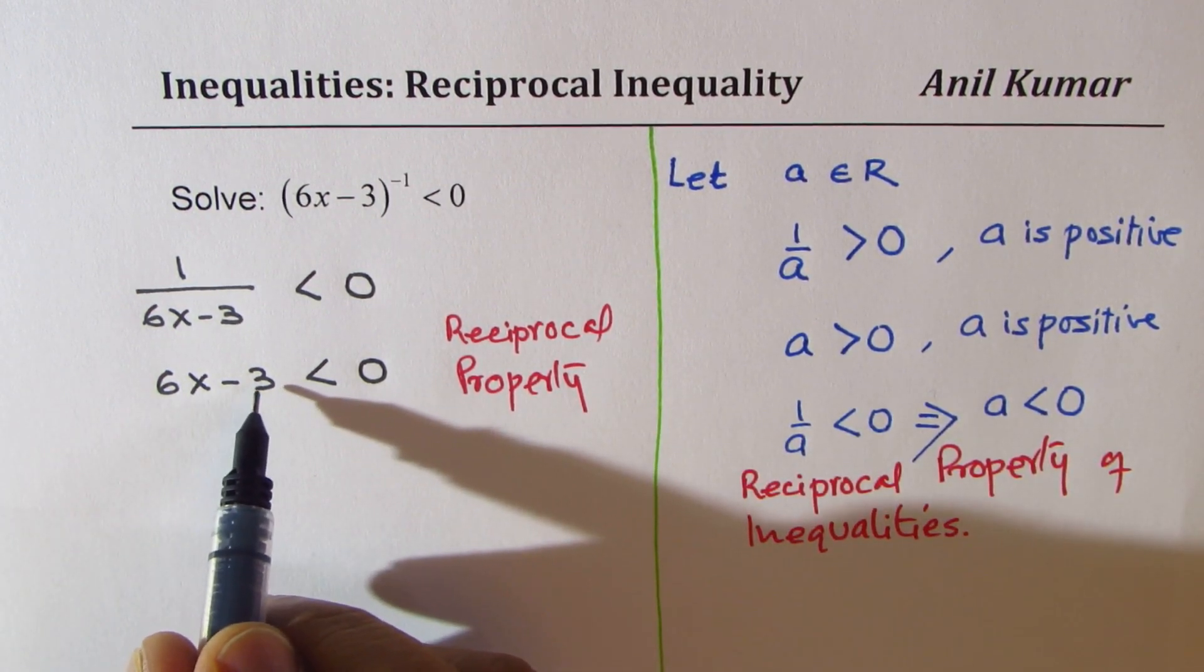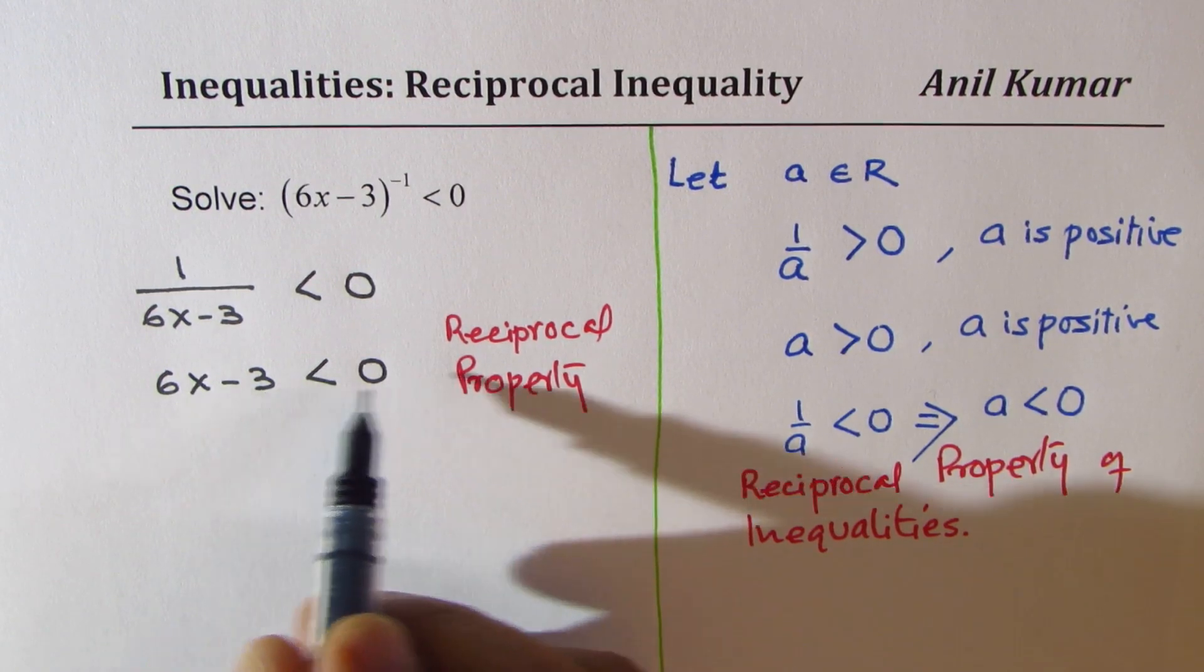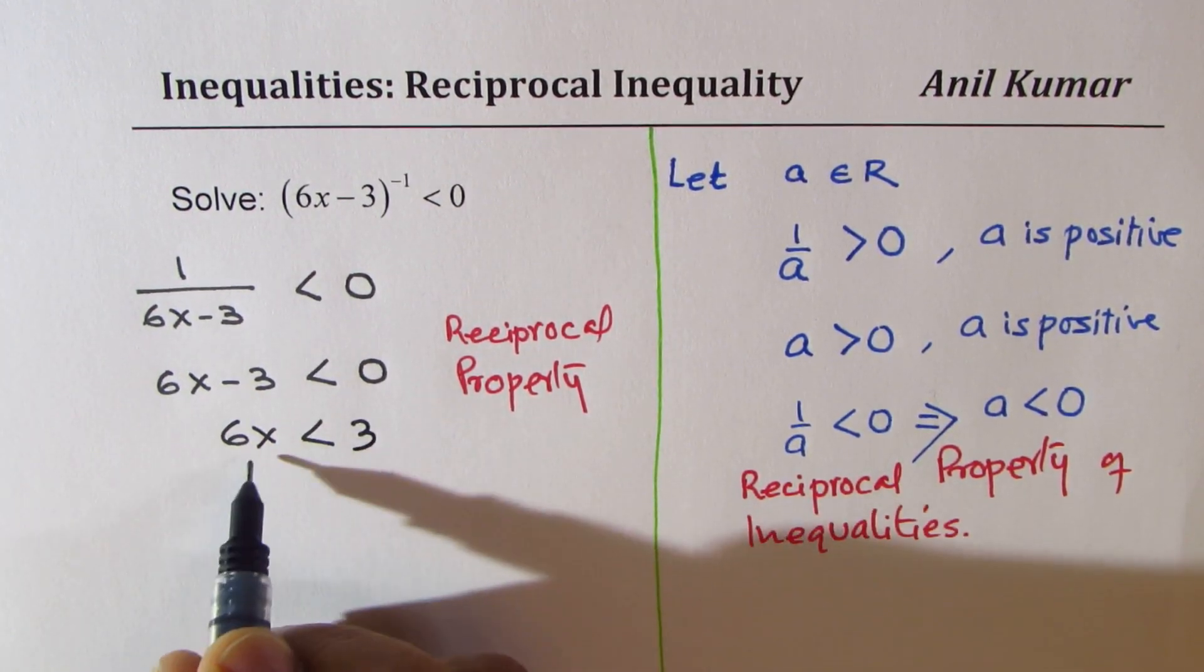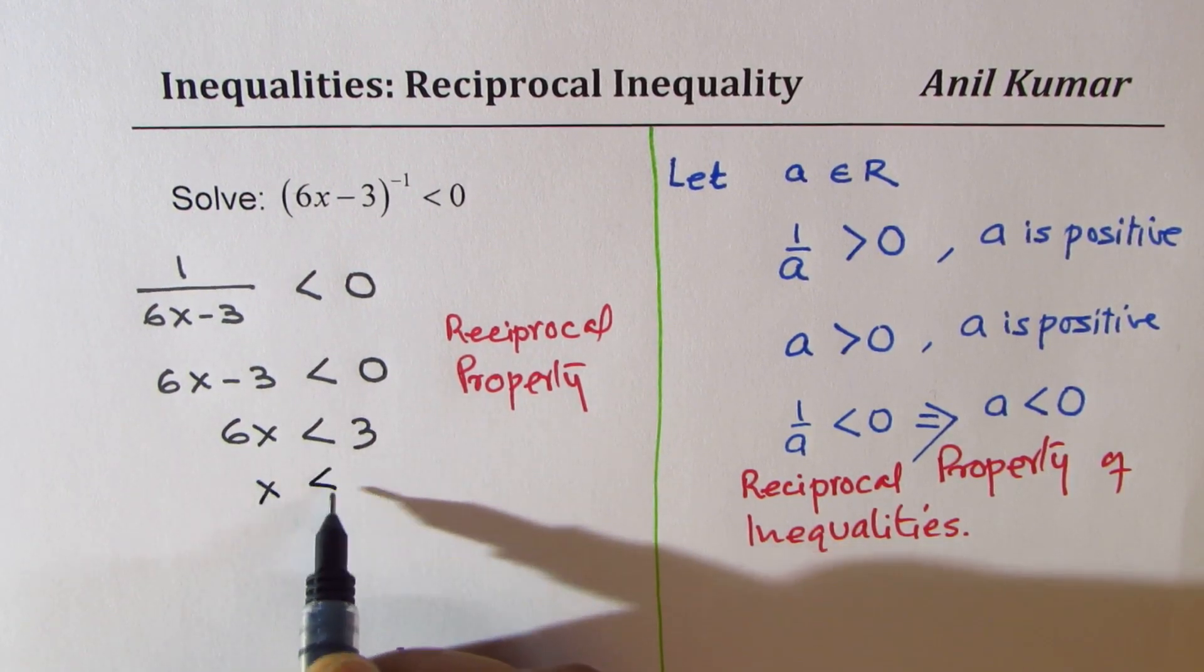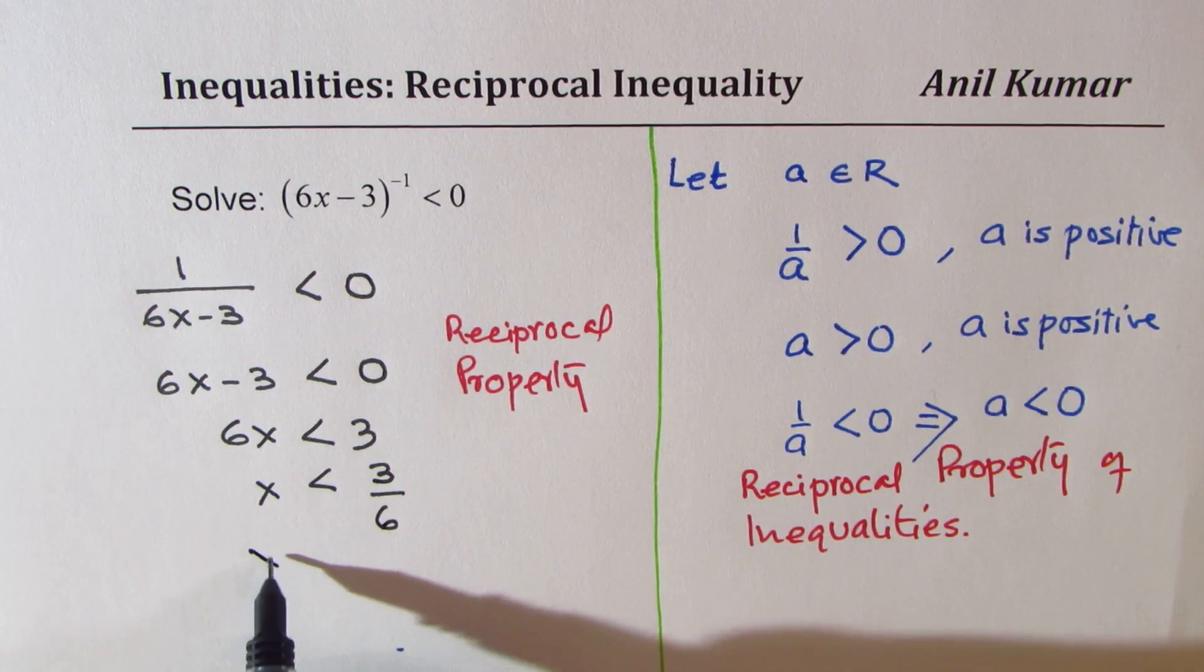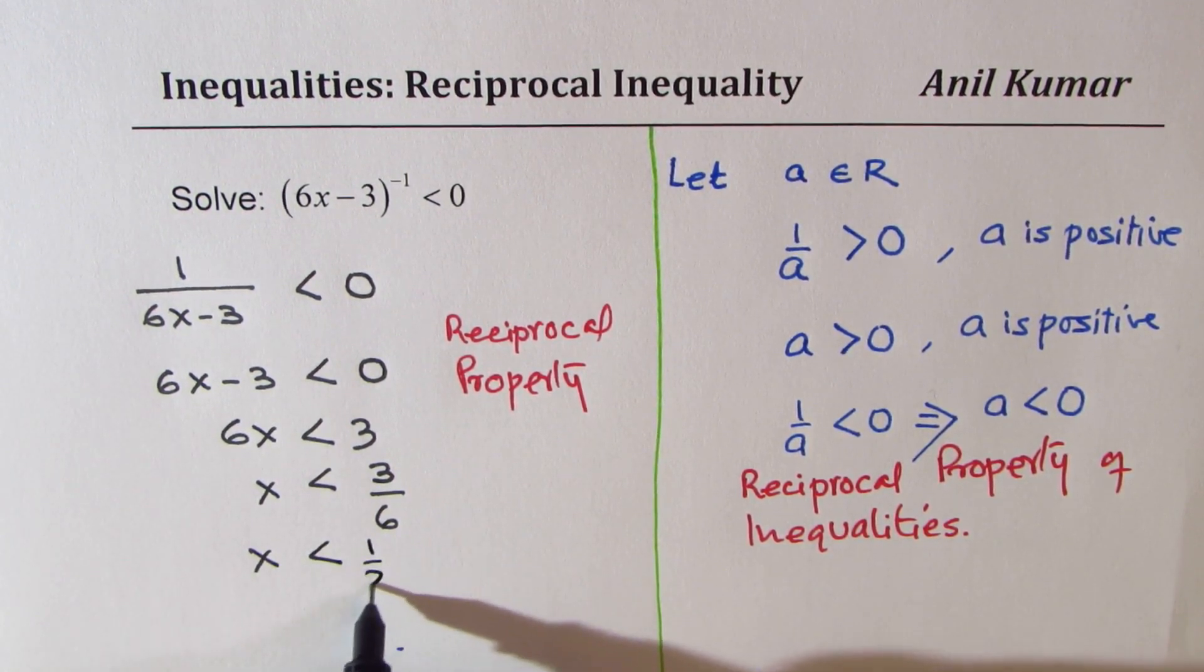We can take minus 3 on the right side. So we get 6x is less than 3, and dividing by 6, we get x is less than 3 over 6 or x is less than half.